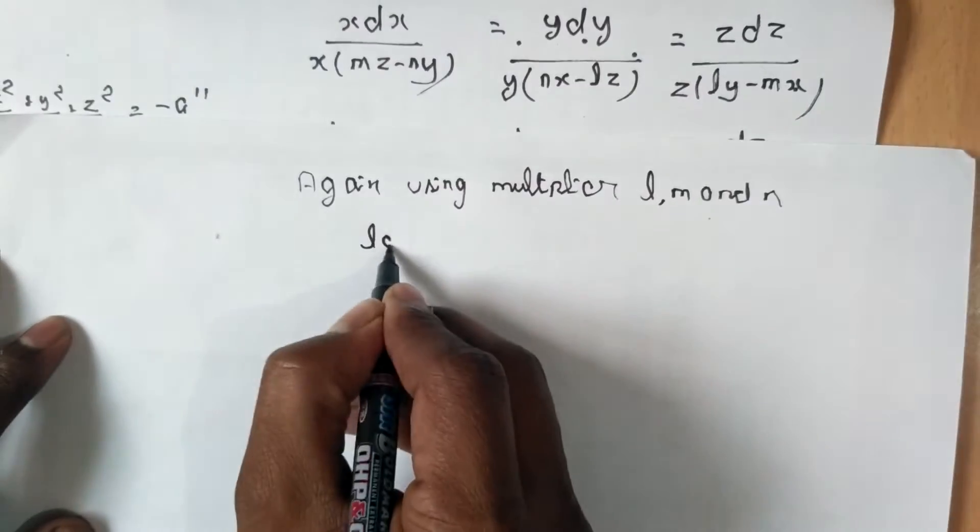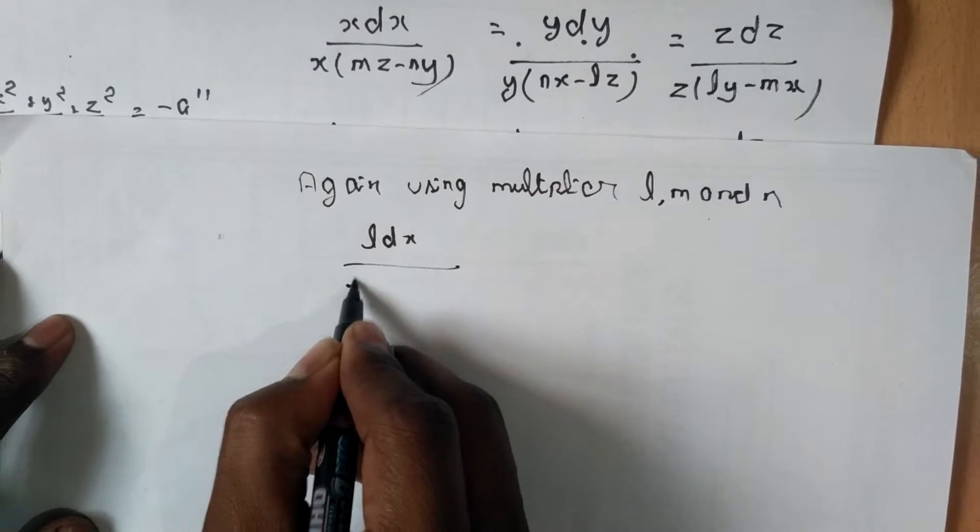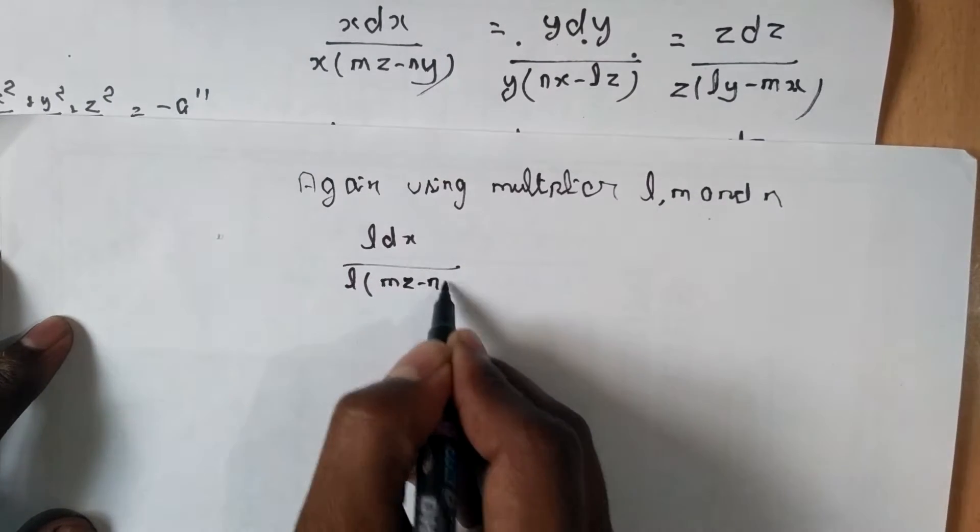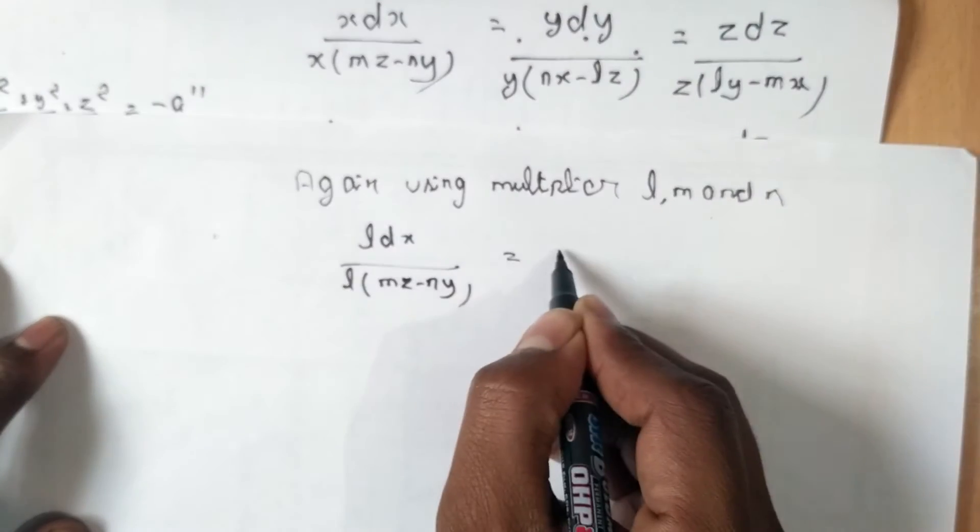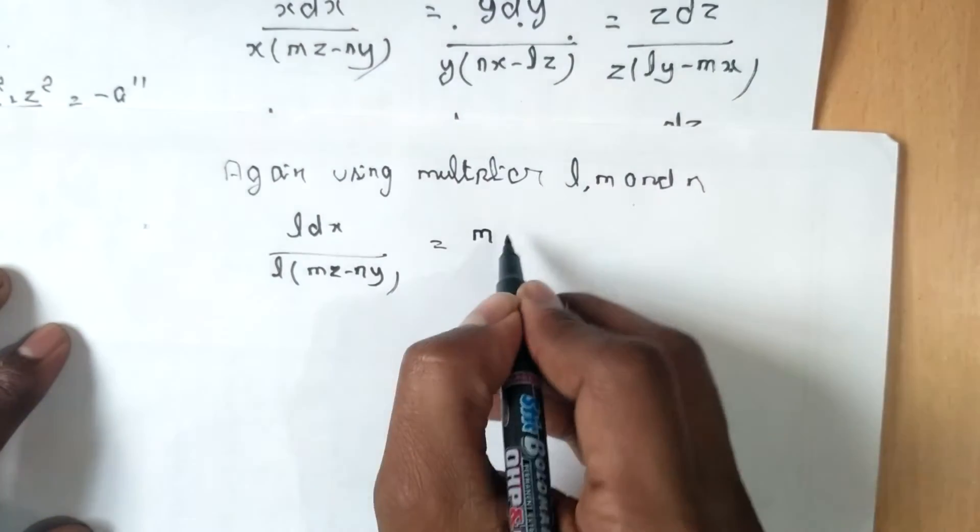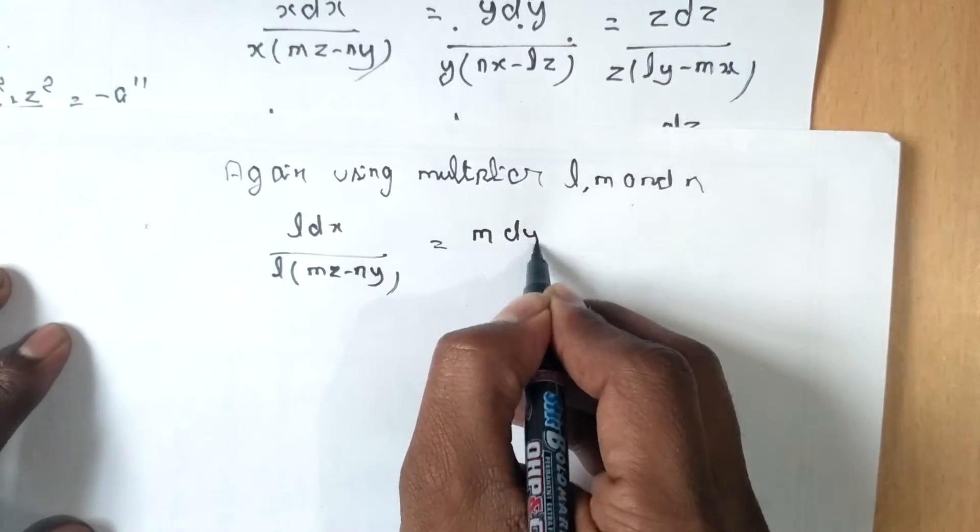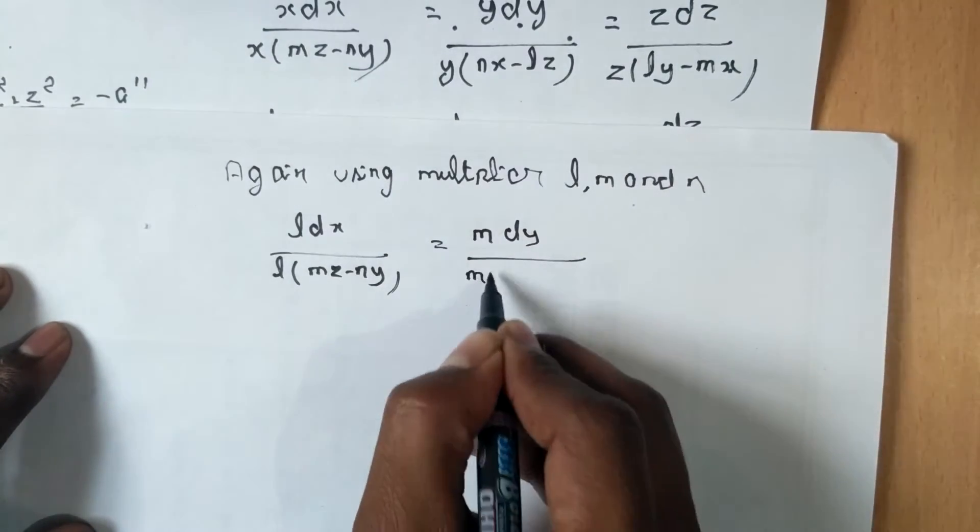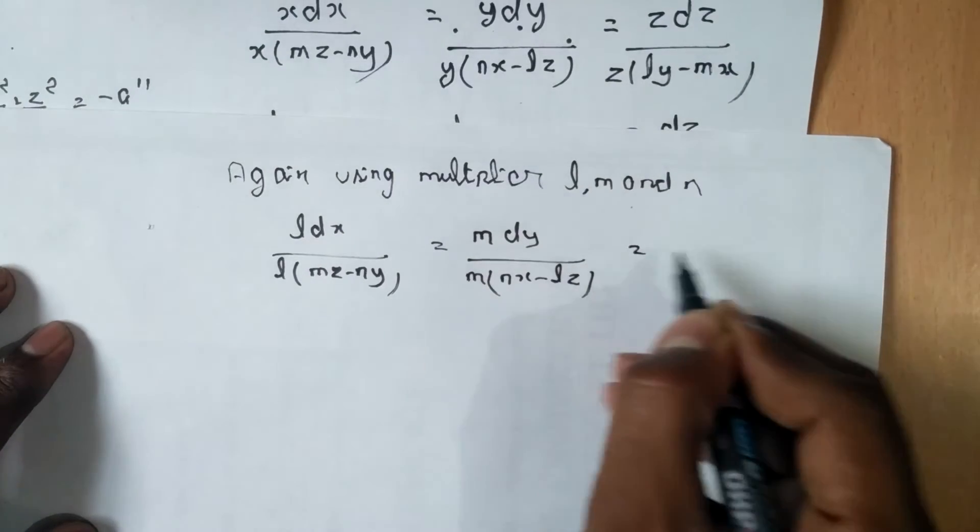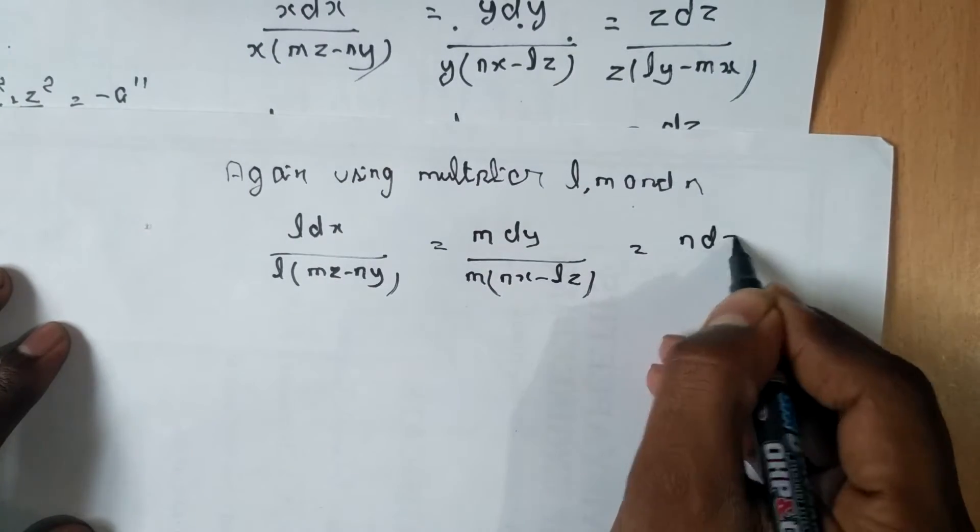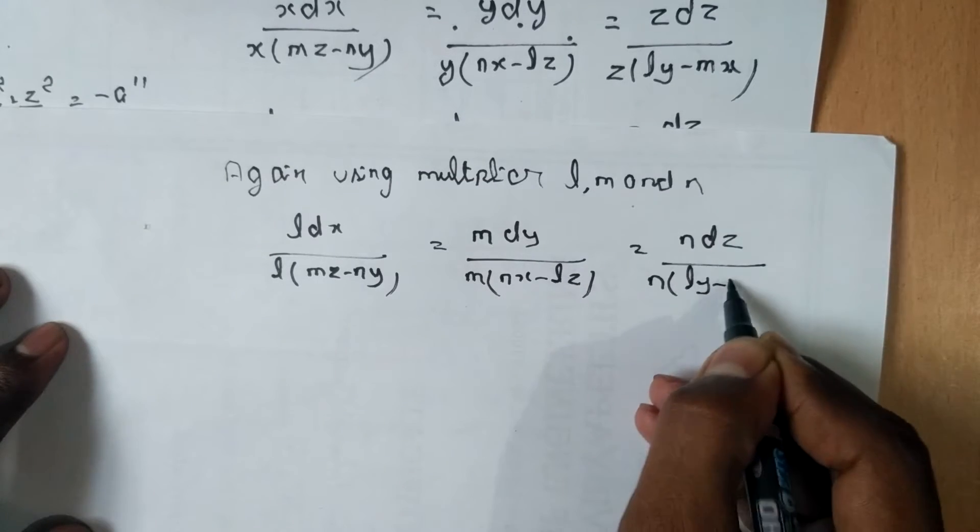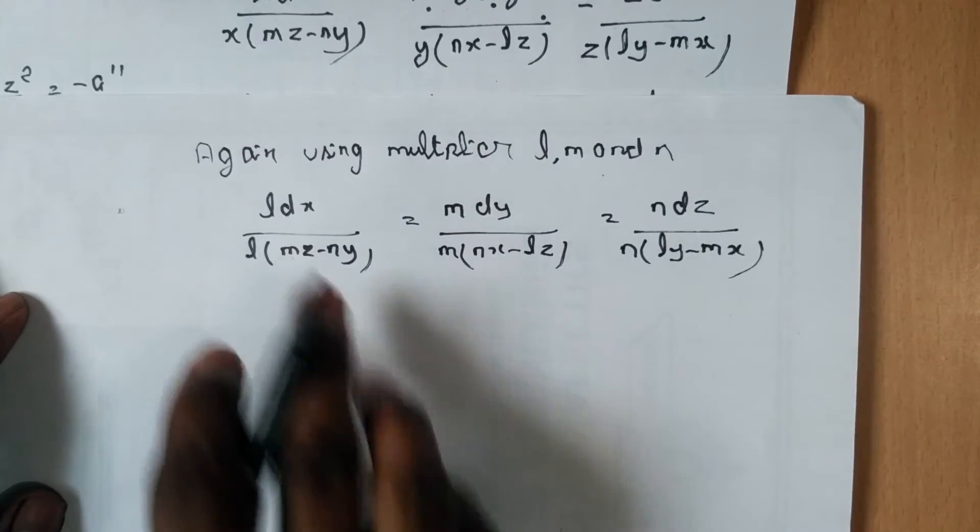We get l dx upon l(mz - ny) is equal to m dy upon m(nx - lz) is equal to n dz upon n(ly - mx). Now again adding all three...